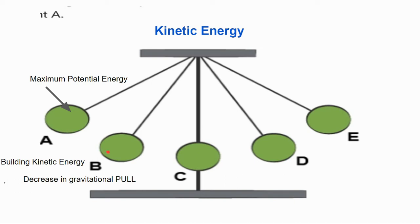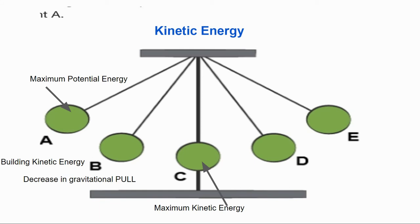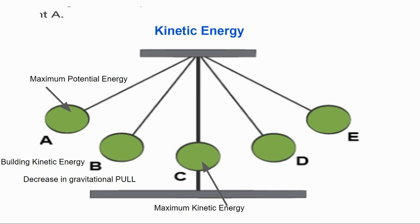So once I let go and it swings down here, it's building its kinetic energy until it gets to point C. And at point C is when it reaches its maximum kinetic energy. When it reaches here, it's got its maximum kinetic energy. That's where the most amount of energy is.